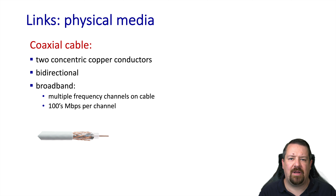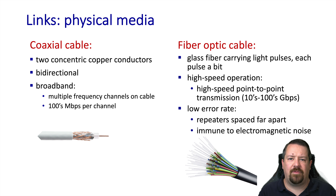Coaxial cables have only two conductors; however, one surrounds the other, providing natural shielding that increases resistance to interference and thus increases the bandwidth that can be supported even over longer distances. Fiber optic cable carries pulses of light, so it is completely immune to electromagnetic interference, making it suitable for very long-distance communication as well as high bandwidth. In long-haul fiber optic networks, repeaters are used to regenerate the light pulses to ensure they have sufficient power to reach the receiver.